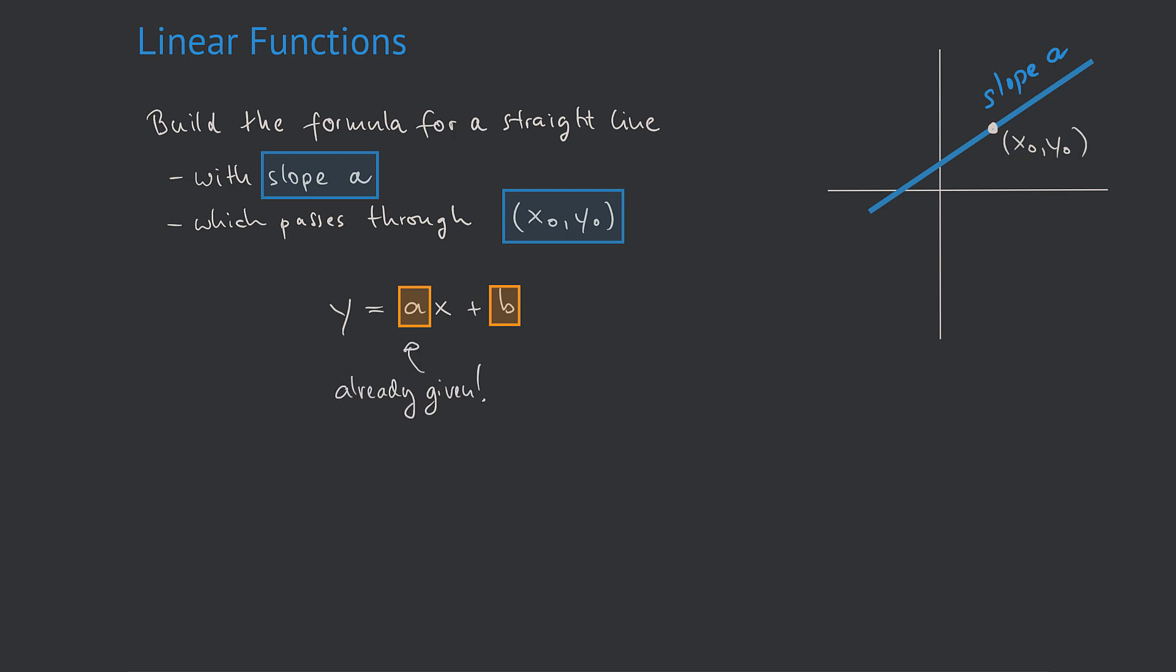In order to find b, on the other hand, we have to somehow use the fact that the line should pass through x0, y0. We do this by expressing the fact that the line should cross x0, y0 in mathematical terms by simply writing the following equation.